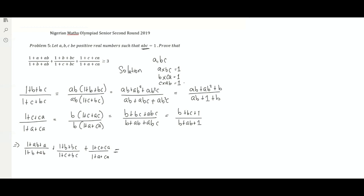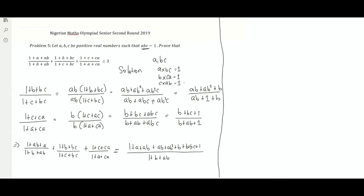Since all denominators are now the same — 1 plus B plus AB — we can add the numerators and keep the same denominator. Adding all three numerators: from the first term we get 1 plus A plus AB; from the second term AB plus AB squared plus B; and from the third term B plus BC plus 1. This combined fraction is what we are now required to prove is at least 3. It's much simpler than the original form of the question.